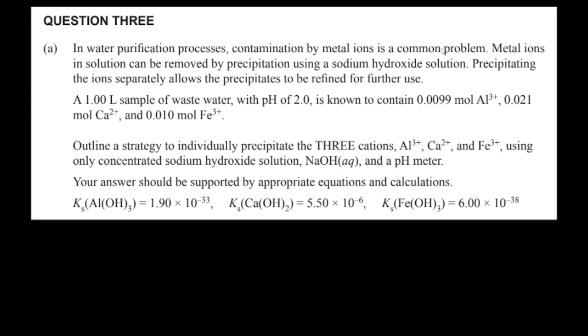We need to outline a strategy to individually precipitate the three ions using only concentrated sodium hydroxide solution and a pH meter. Our answer should involve some calculations and they give us the solubility product constants for these three metal ions when they form an insoluble solid with hydroxide.